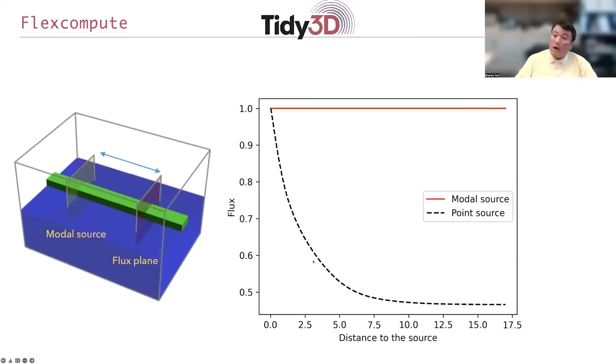And that's a source of unwanted electromagnetic interference inside the computation. So if you would like to get a high quality calculation of the behavior of the waveguide system, it would be advantageous to use the modal source so that you don't have such radiation.